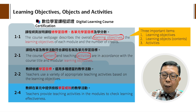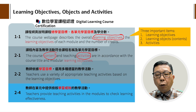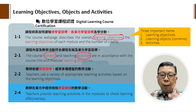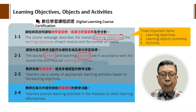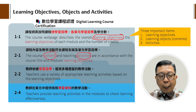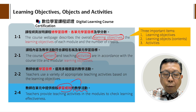依据你的Learning objectives选择多种适当的教学活动，也就是说必须要多元教学，不是只有一种而已。这是2-2。那2-4则要求教师在单元中提供符合学习成效的教学活动。